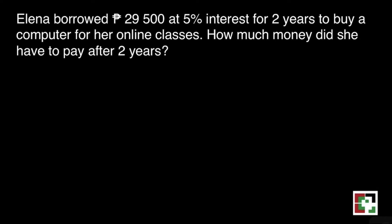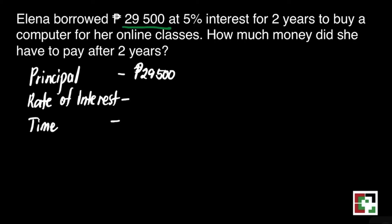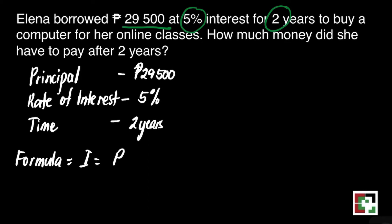We have the next problem. Elena borrowed 29,500 pesos at 5% interest for 2 years to buy a computer for her online classes. How much money did she have to pay after 2 years? For this case, we're not only looking for the interest but also the total amount. We just need to add the interest and the principal to get the total amount. Our principal is 29,500 pesos, the rate of interest is 5%, and the time is 2 years. The formula we'll be using: interest is equal to principal times rate times time.